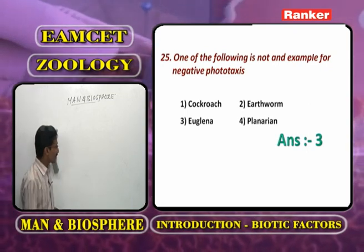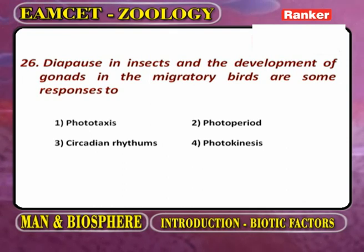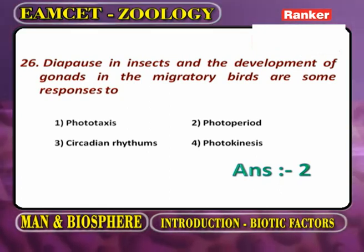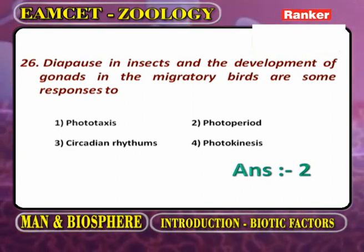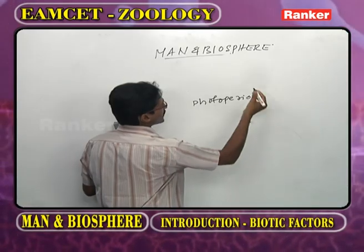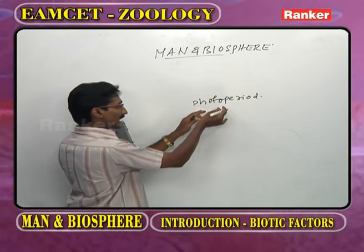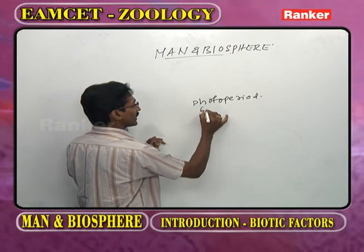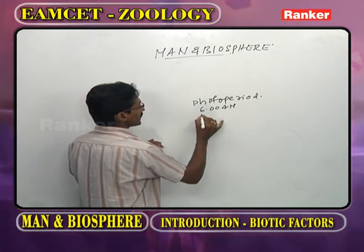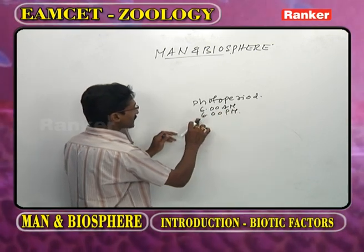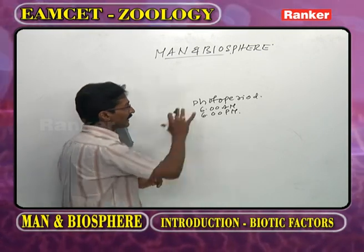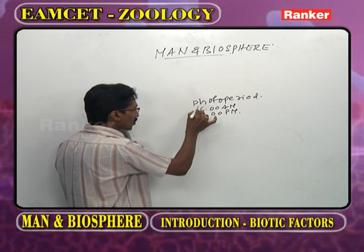Euglena exhibits positive phototaxis, not negative. The remaining three - cockroach, earthworm, planarian - are examples of negative phototaxis. Regarding diapause in insects and development of gonads in migratory birds: the photoperiod is the availability of light intensity from sunrise to sunset.